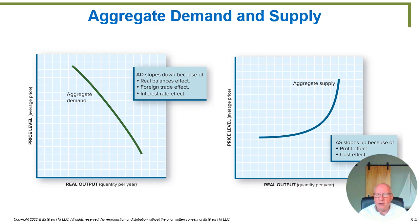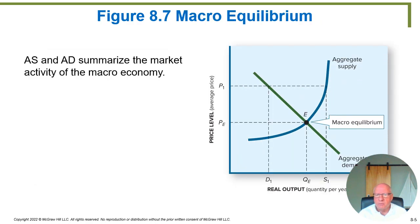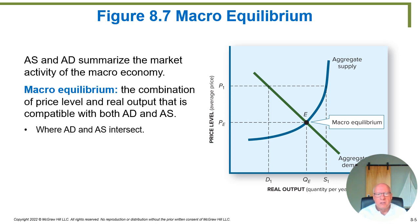With the aggregate supply curve, we have the two points we just talked about — the profit effect and the cost effect. What we're trying to do is put the two curves together, just like we did with supply and demand. We have an aggregate demand curve sloping downward and an aggregate supply curve sloping upward. The two are equal at point E, which we call equilibrium, giving us the quantity of goods and services produced at a particular price level for the entire economy. We can think about equilibrium for the entire economy the same way we think about equilibrium for individual markets.